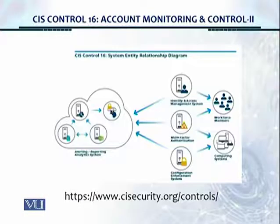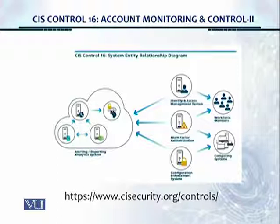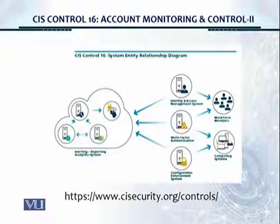This is the system entity relationship diagram as discussed. We have an alerting reporting analytics system, and then we're going to be using identity and access management systems, multi-factor authentication systems, configure initiation enforcement systems, and there are workforce members and computing systems on which these controls will be applied.